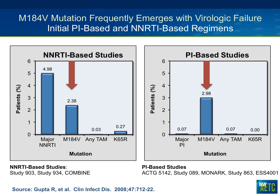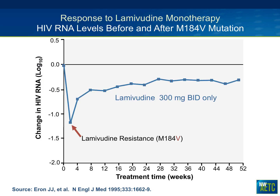How common is the M184V mutation? In NRTI-based regimen failures — like Atripla-type failures or rilpivirine failures — the most common mutation is an NNRTI mutation, but the second most common is M184V. In protease inhibitor-based studies, you don't see many protease mutations early; what you see is almost predominantly M184V. It is the most common mutation we see in clinical practice.